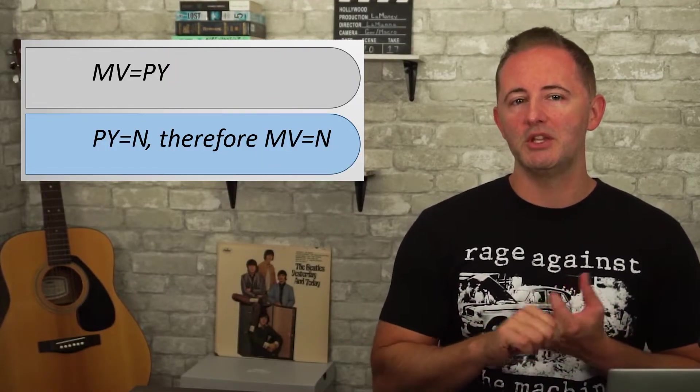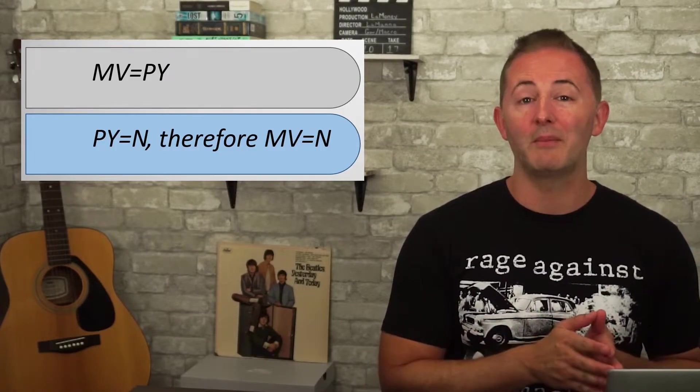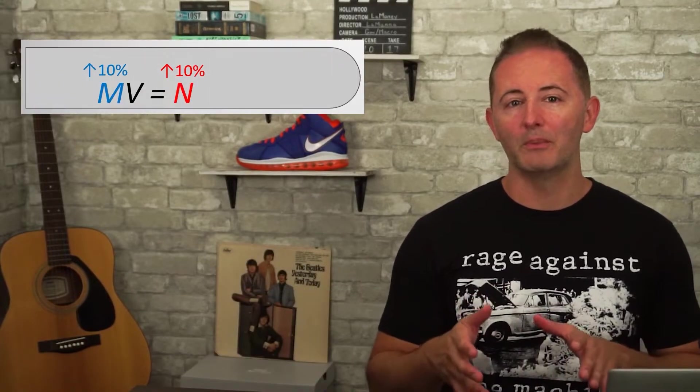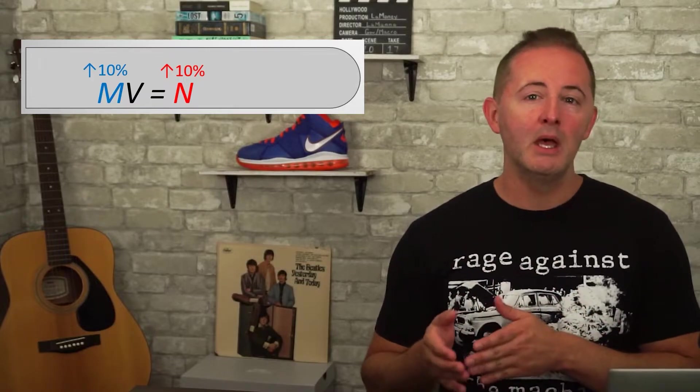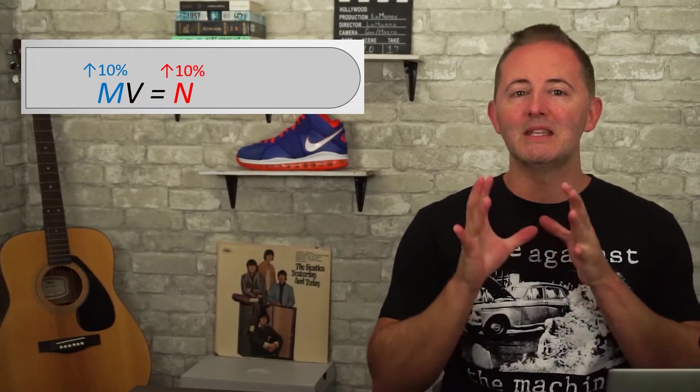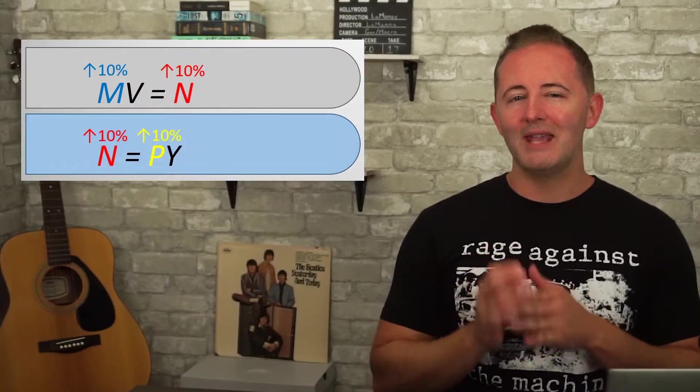This makes sense because nominal GDP just means total spending — the amount of money multiplied by how many times that money gets spent equals total spending. The claim is that growth of the money supply determines the growth of the price level. Assuming velocity is stable, an increase in M leads to a proportional increase in nominal GDP. Since changes in the money supply don't affect real GDP in the long run, a 10% increase in M leads to a 10% increase in nominal GDP, and the entire 10% increase is the result of a 10% increase in P.